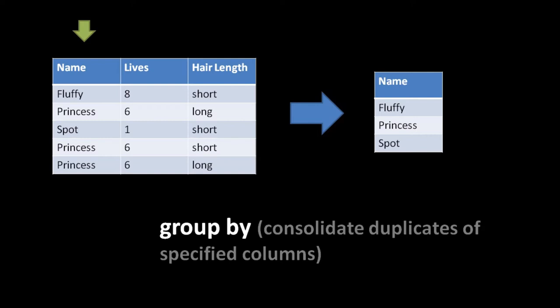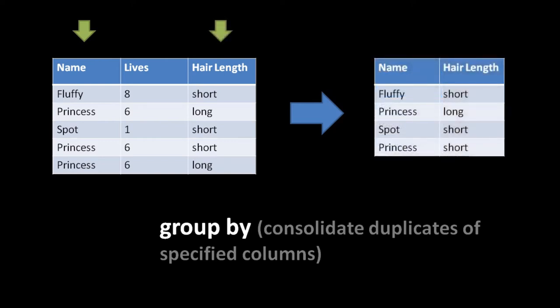Since we're grouping on name, it doesn't make sense to include the other columns because the values in those other columns might be different. For example, we have three Princesses being consolidated into one, but two rows with name Princess have long hair while another has short - so we'd have conflicting values. It is possible to group on multiple columns: if we group on both name and hair length, we get back a table where name and hair length together form a unique pair.